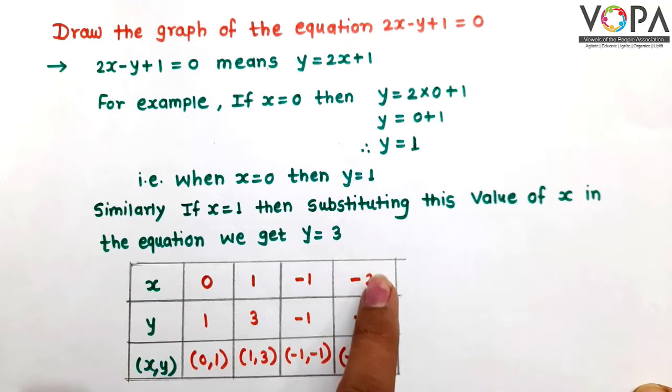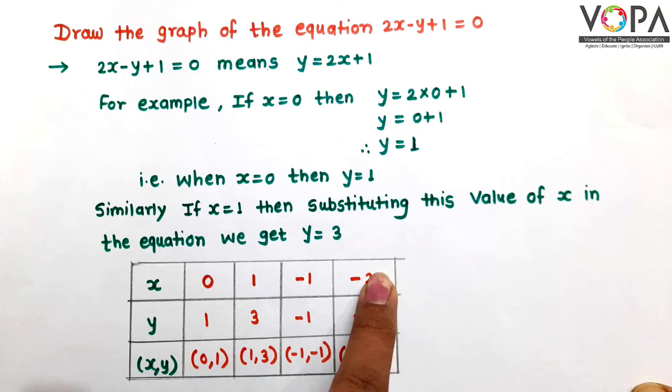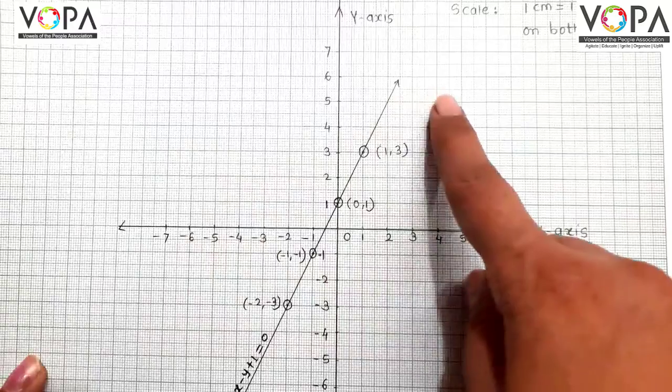When x is equal to minus 2, then y is equal to minus 3. And the coordinates of the point are (-2, -3). Now, let us plot these points on a graph paper.